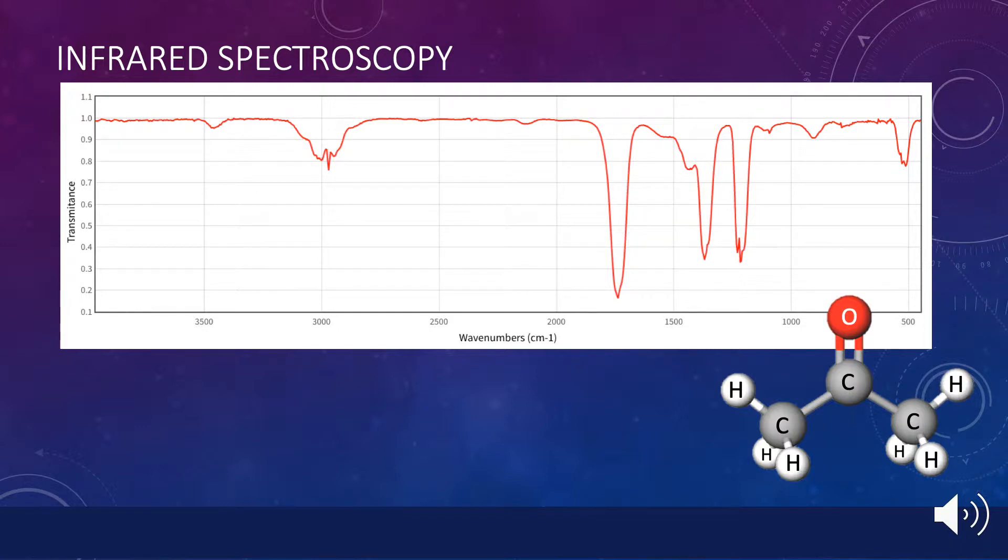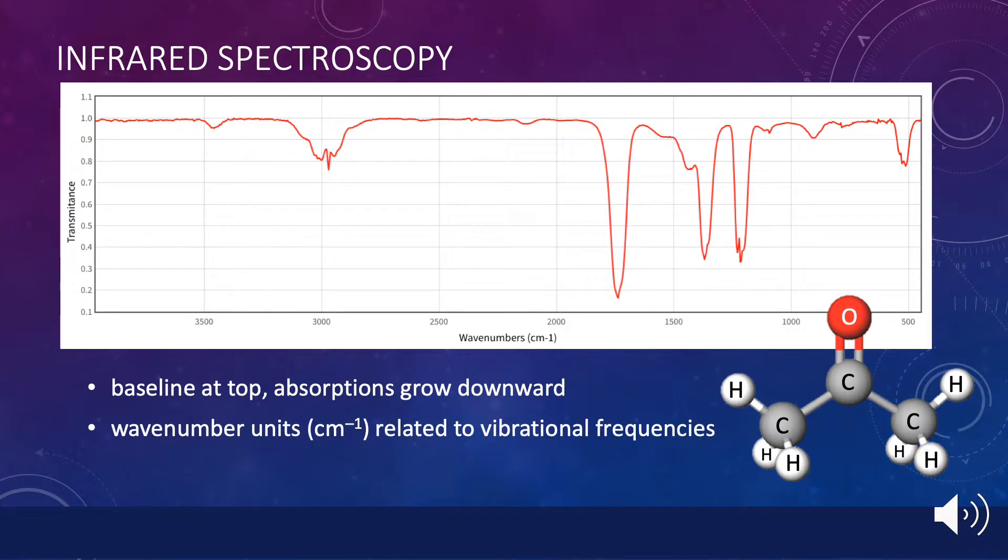There are a couple of important things to note about this graph. Infrared spectra are usually presented in an inverted format. The baseline is located at the top of the graph, and absorptions are displayed as growing downward from this baseline. The units along the horizontal axis are given in wavenumbers, or inverse centimeters, a measure that is related to both the wavelength of infrared light that is absorbed and the frequencies of different vibrations in the molecule. The energy of the radiation absorbed increases as one moves from right to left in this graph.